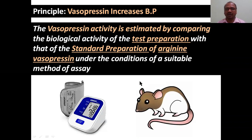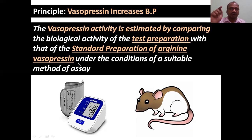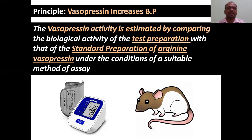This point you have to write in the examination: the vasopressin activity is estimated by comparing the biological activity of the test preparation with the standard preparation. The standard preparation is always arginine vasopressin — not just vasopressin, arginine vasopressin. The method of assay is BP checking of a rat.